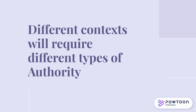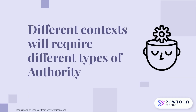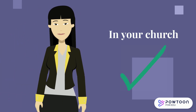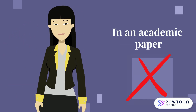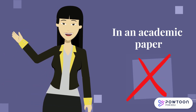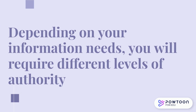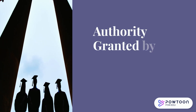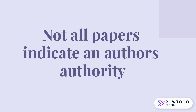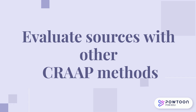Different contexts will require different types of authority. For example, within your church community, your pastor is considered an authority figure. However, you wouldn't want to cite your pastor as a source in an academic paper because your pastor is not an authoritative source within the context of academia. Depending on your information needs, you will require different levels of authority, but in university, most papers will require the authority granted by higher-level degrees. Not all scholarly sources will indicate a scholar's authority within the article or book, so evaluating sources with the other CRAAP elements is essential.